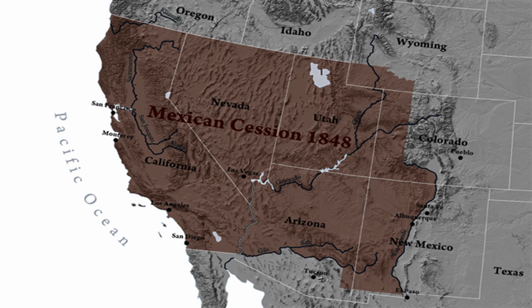After the Mexican-American War, we have something in American history known as the sectionalism crisis, that really goes from the end of the Mexican-American War in 1848 all the way to the beginning of the Civil War in 1861. Now, getting to the Wilmot Proviso.